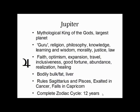Jupiter completes a cycle through all 12 signs of the zodiac in 12 years and therefore passes through one sign in one year. It's an interesting thing that Jupiter takes one year — which is a solar cycle — to complete one twelfth of its cycle.